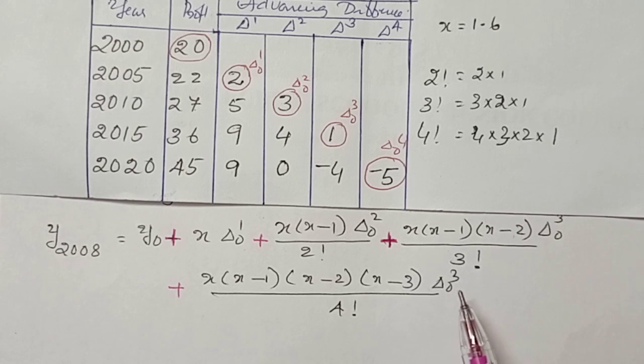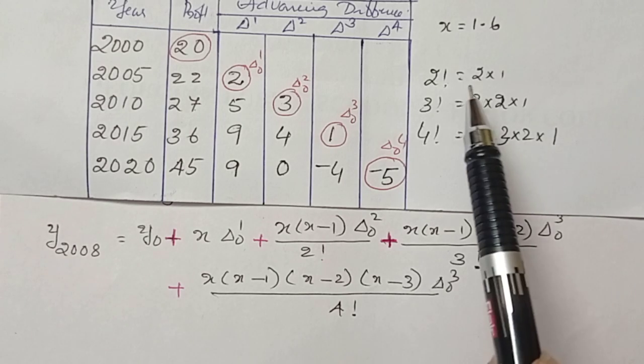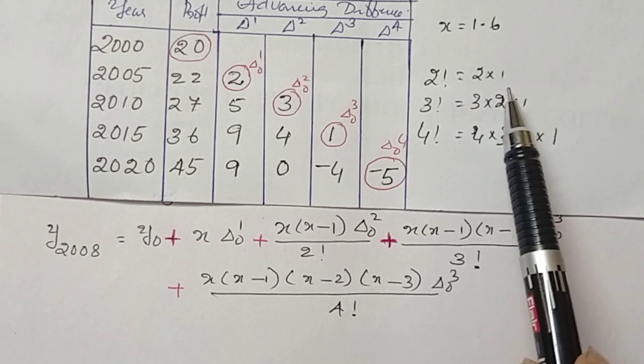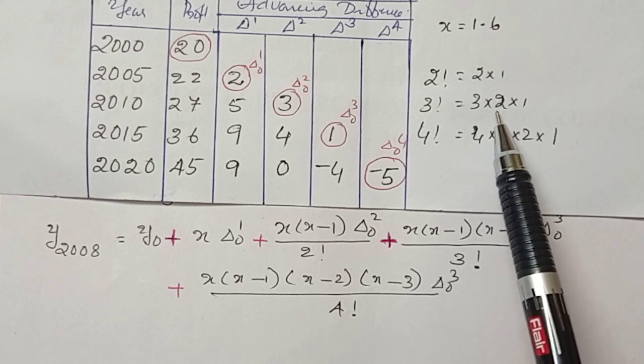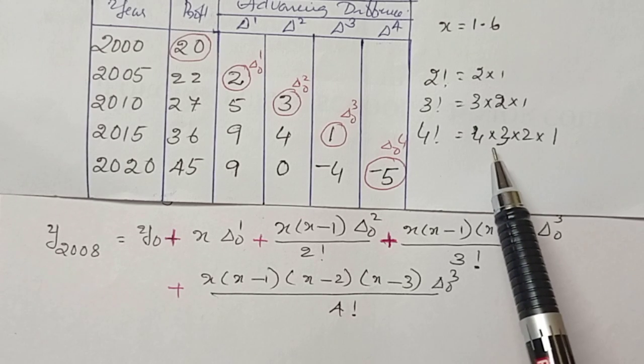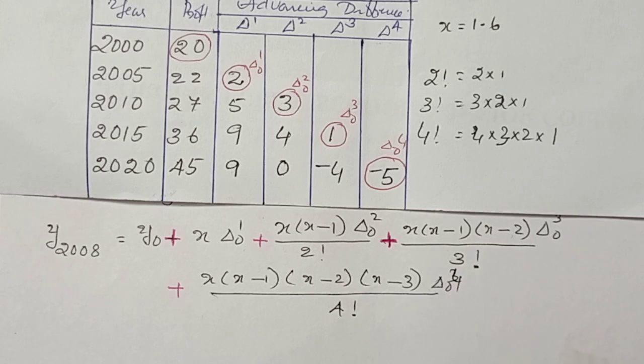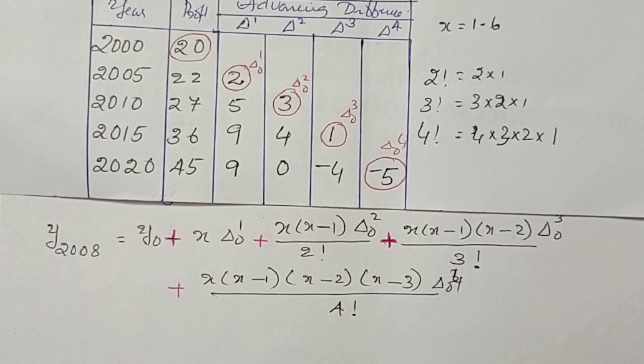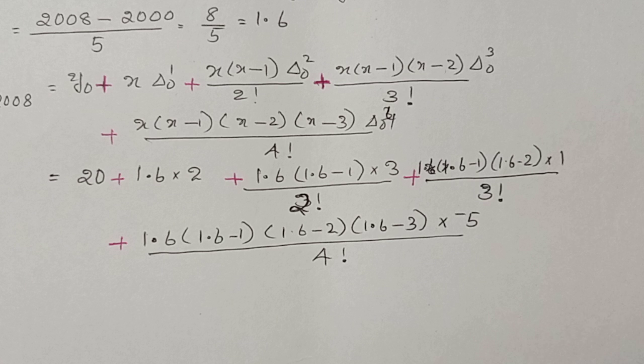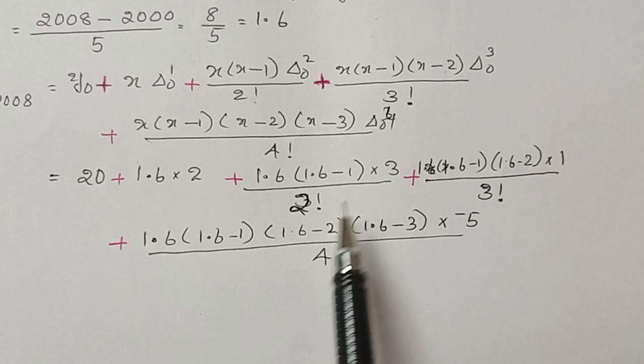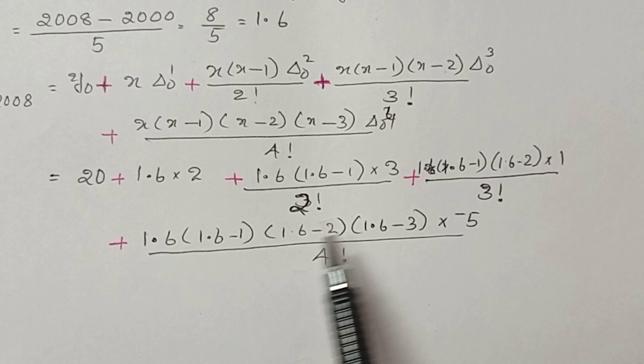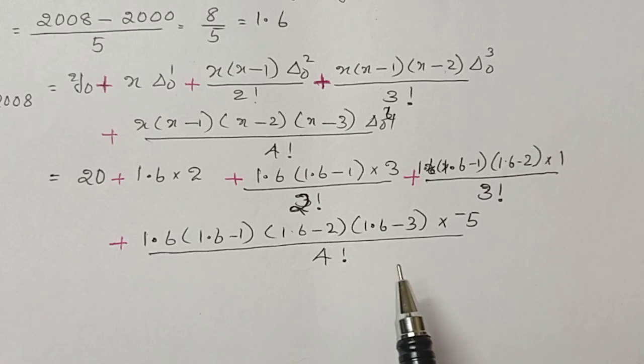What is 2 factorial, 3 factorial, 4 factorial? 2 factorial is equal to 2 into 1, 3 factorial is equal to 3 into 2 into 1, 4 factorial is equal to 4 into 3 into 2 into 1. Now substituting each value, value of x is equal to 1.6, then the other values are marked on the table.